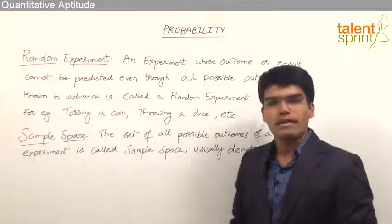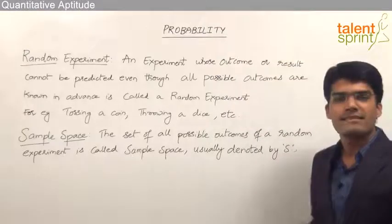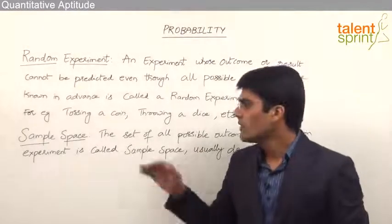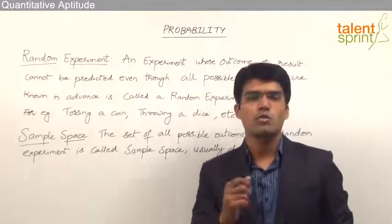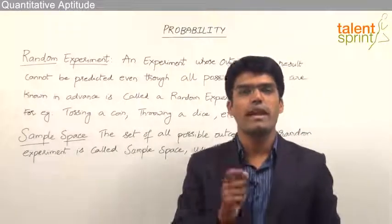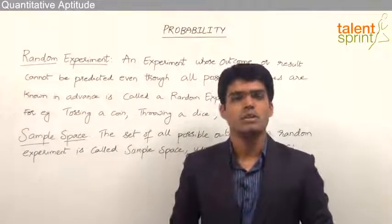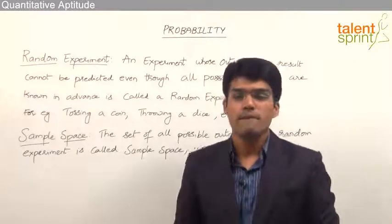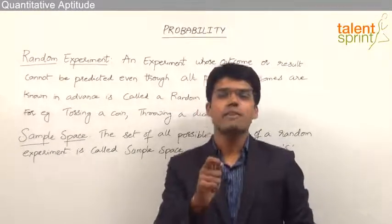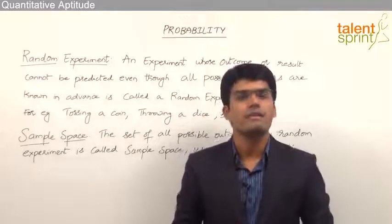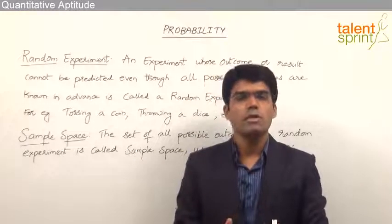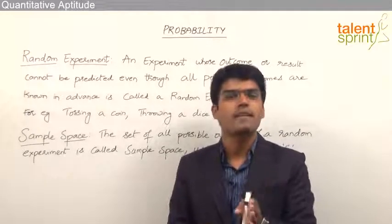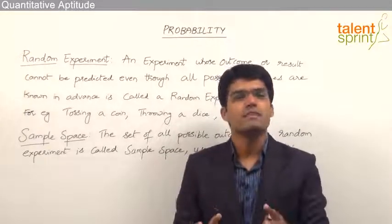For example, tossing a coin or throwing a dice are all called random experiments. When we toss a coin we know that there are two possible outcomes — either it can show a head or it can show a tail. Even though we know the two possible outcomes, we cannot predict what exactly will be the outcome when a coin is tossed. So even though a coin is tossed n number of times under the same conditions, predicting the output at each instant is not possible.